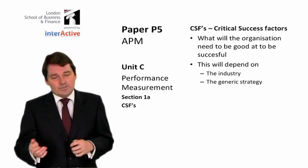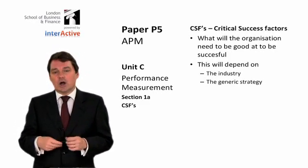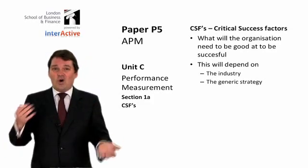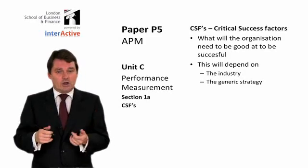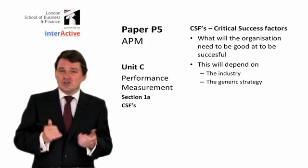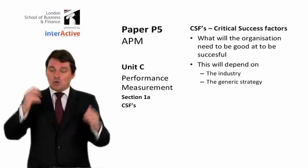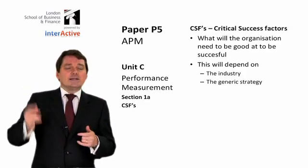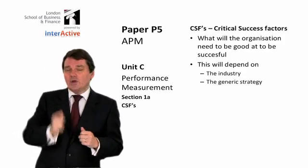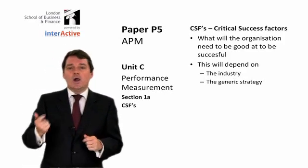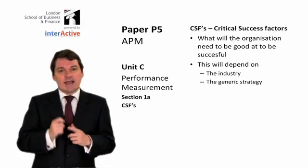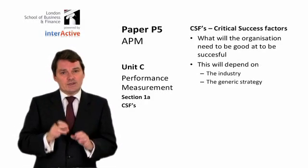If you're mass producing a car, you need to keep the costs down. Whereas if you're producing a few luxury cars — you're not going to produce very many of them, but they're going to be very expensive — cost control probably isn't as much of an issue, but other things will be instead. So whenever you are asked to interpret some figures, think about what the critical success factors would be in that industry for that particular strategy, because then we have an idea of what the question is all about.